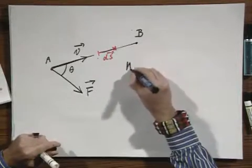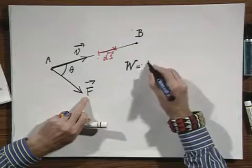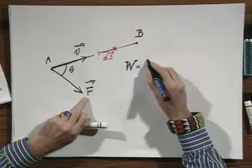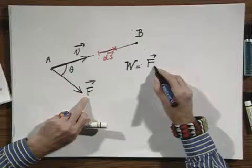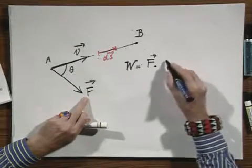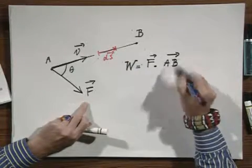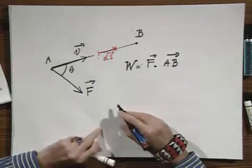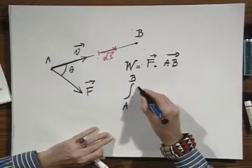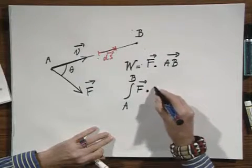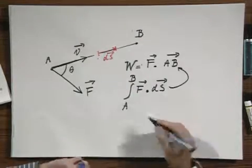So the work that is done by this force equals the dot product. It is the dot product between the force times the displacement AB, which I will indicate as a vector. Of course, effectively what it is, it is the integral in going from A to B of F dot ds. But that in this case is the same as here because it's a straight line.